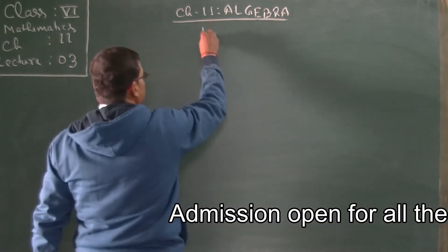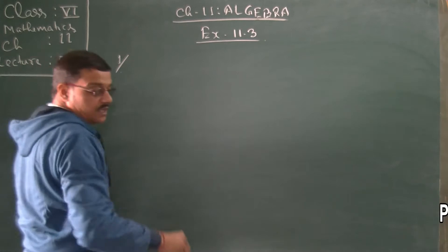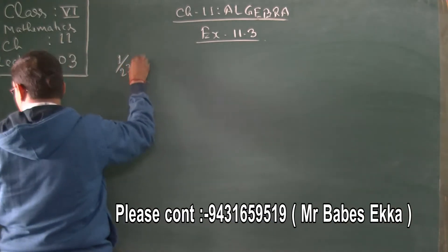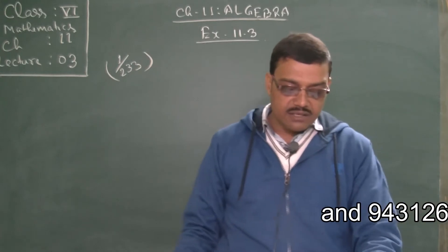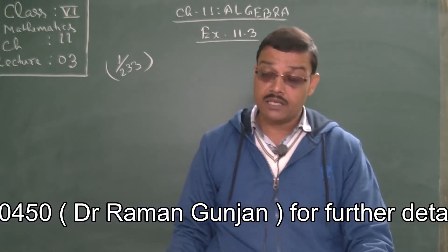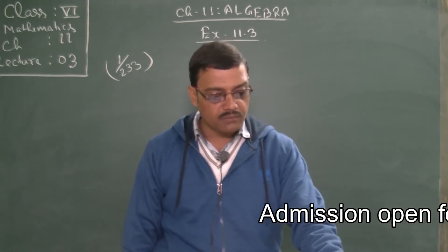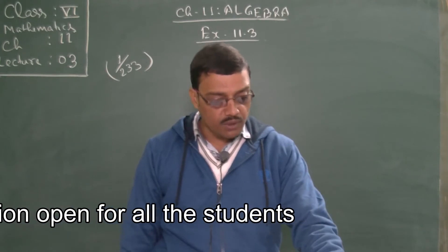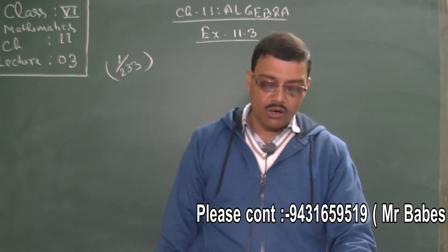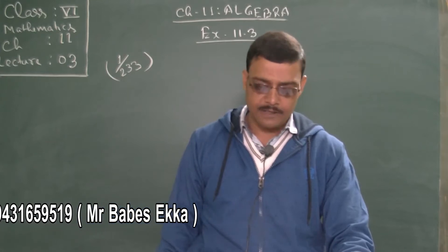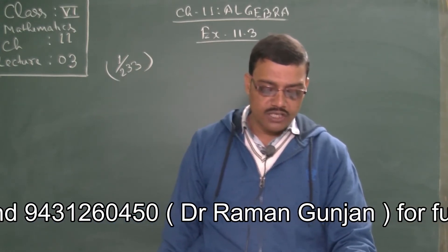If you look at exercise 11.3, question number one on page 233 of your maths and CRT book: make as many expressions as possible with numbers, no variables. We don't need to use variables in this sum. You can form expressions from 3 numbers: 5, 7, and 8. Every number should be used not more than once. Use only addition, subtraction, and multiplication — no division is required.